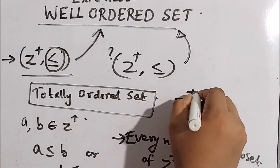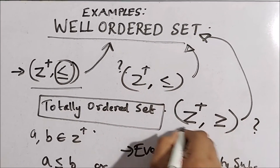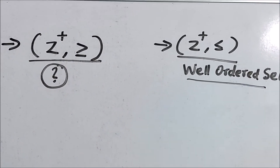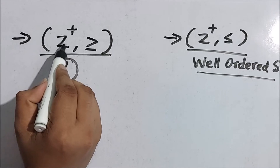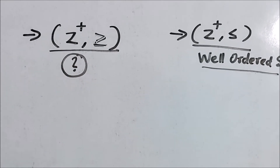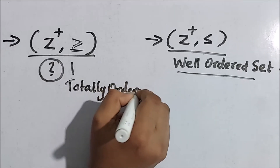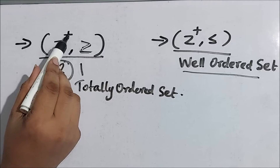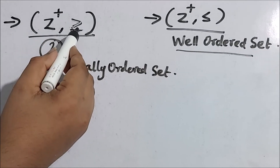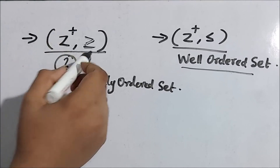Now what about the set (ℤ⁺, ≥), with the greater than or equal to relation — is this a well-ordered set? We know (ℤ⁺, ≤) is a well-ordered set. The question is whether the set of positive integers together with the greater than or equal to relation is also well-ordered. We can see that this is still a totally ordered set, since every pair of elements in ℤ⁺ is comparable with respect to this relation, and greater than or equal to is a partial ordering relation.